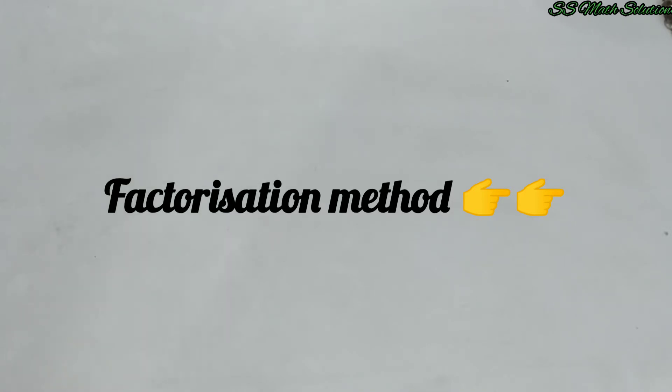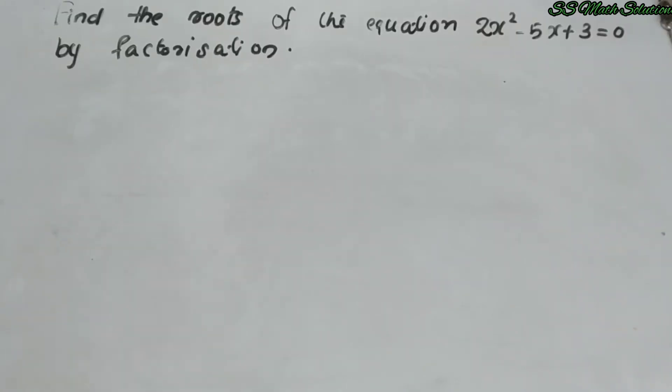Our first question is: find the roots of the equation 2x² − 5x + 3 = 0 by factorization. This is the question we are given about factorization — find the roots of 2x² − 5x + 3 = 0 by factorization.